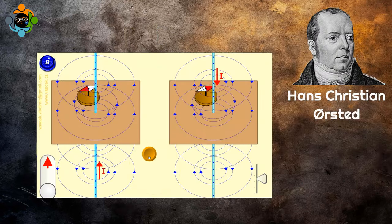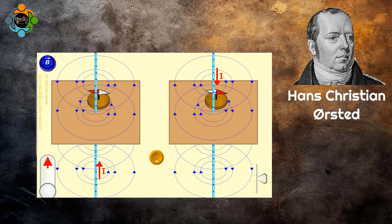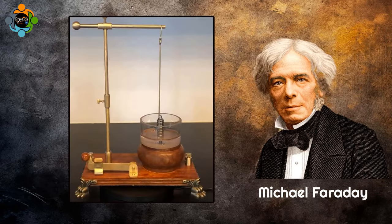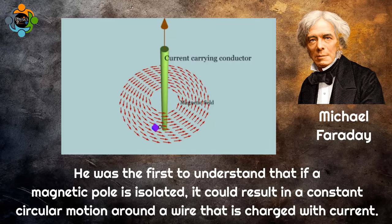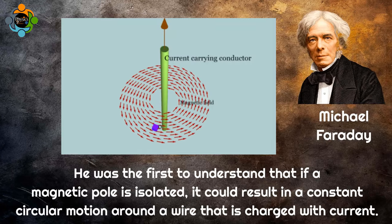This was the basic principle that Faraday used to create the first motor. He was the first to understand that if a magnetic pole is isolated, it could result in a constant circular motion around a wire that is charged with current.